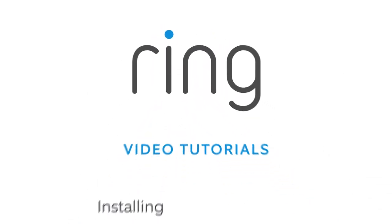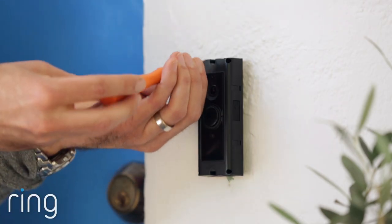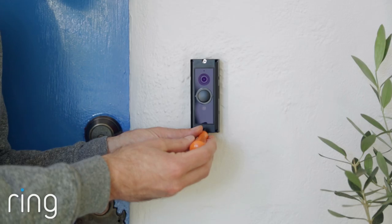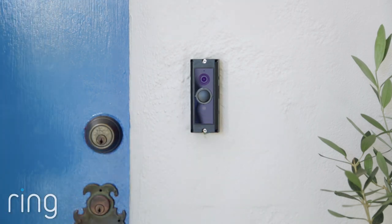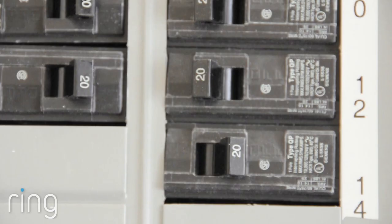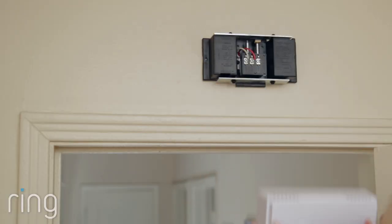This video covers installing the Pro Power Kit inside on your existing internal doorbell. Do this before installing your Ring Video Doorbell Pro on the front of your home. Make sure power to your doorbell is still switched off at the breaker. Then locate your internal doorbell and remove the cover.